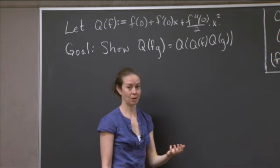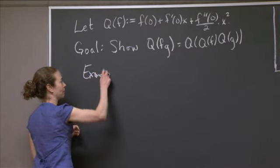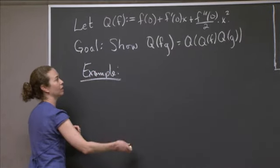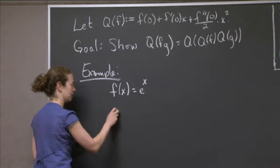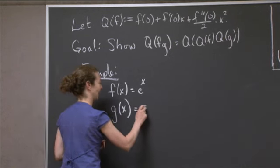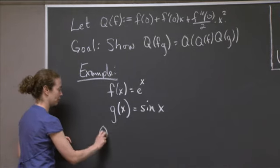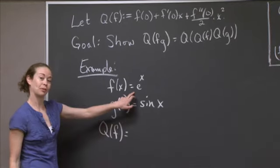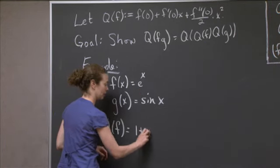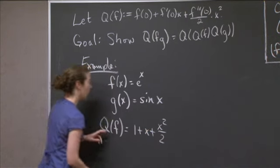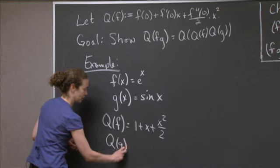So let me give you an easy example. Let f(x) equal e to the x, and let g(x) equal sine x. Then what is Q(f)? Q(f) is the quadratic approximation to e to the x at x equals 0, and that's going to be 1 plus x plus x squared over 2. You already knew this. And Q(g), the quadratic approximation of sine x, is just x.